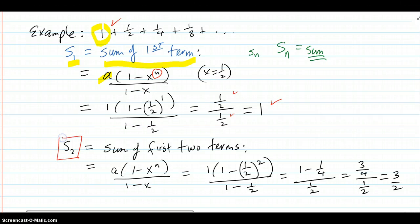S2 is the sum of the first two terms. We put it in our formula. The a is 1. The x constant ratio is one-half. This time, the n is 2, dividing by the 1 minus x. So, you get 1 minus one-fourth over one-half. Divide those, and you get three-halves. And sure enough, the sum of the first two terms is three-halves.